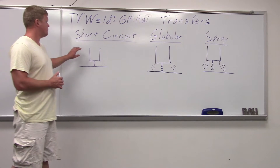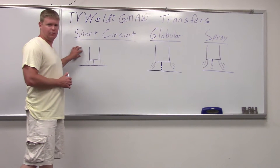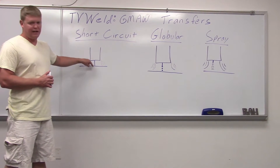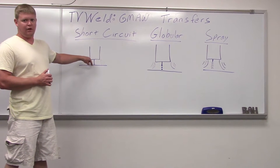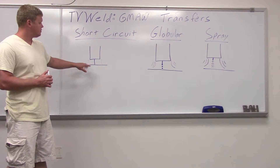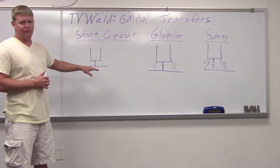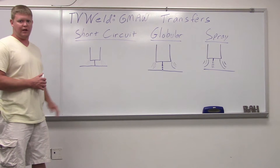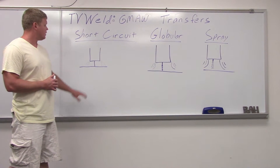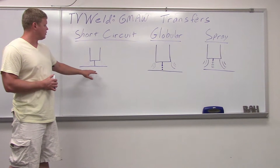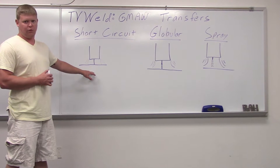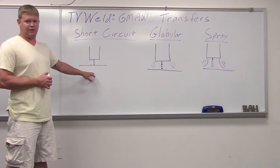Short circuit is by far the most commonly used. It makes direct contact with the molten weld pool. It has spatter, but not big spatter — usually you can take it off with a wire wheel. It's also the coldest, so it's going to have the lowest wire feed, the lowest voltage, and things like that.